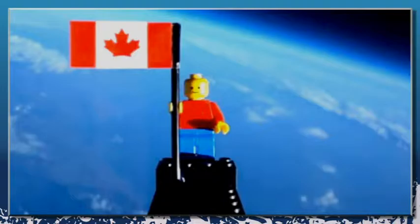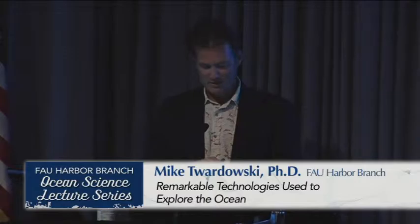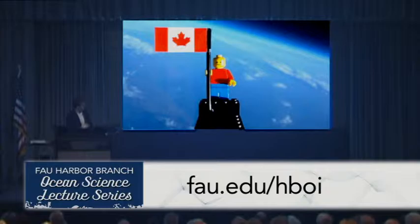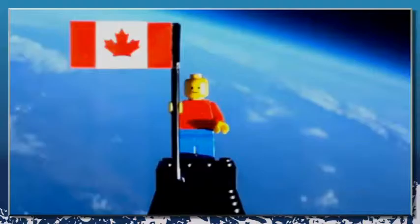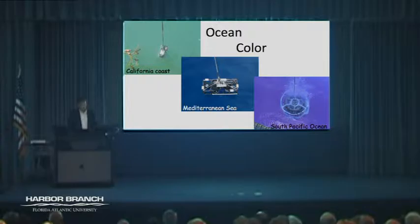Two kids in high school put Lego man with the Canadian flag on a weather balloon and sent it up. As it goes up you can see the atmospheric effects change and modify what we see looking down. At 80,000 feet you see just a blue glow due to scattering off water molecules in the air and aerosols. When a satellite imager looks at the ocean, about 90% of that signal is from the atmosphere, and we need to remove that to be able to look at ocean color.